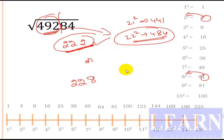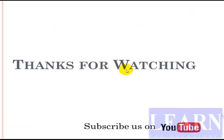If you recall all these concepts, you can find the square root of any five-digit or six-digit number within just two seconds. You need to practice a lot — if you practice, you can solve it in just one second. Thanks for watching and don't forget to subscribe to our YouTube channel.